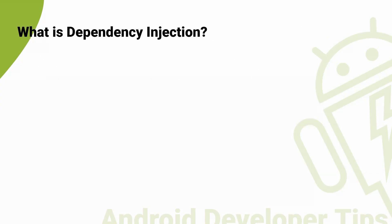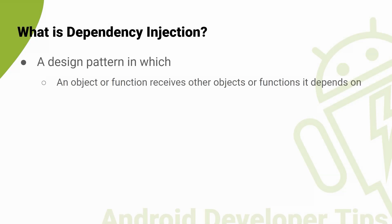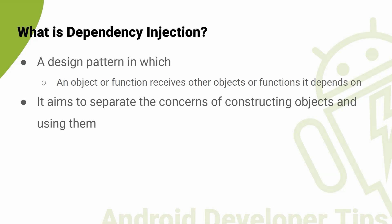What is dependency injection? Dependency injection is a design pattern in which an object or function receives other objects or functions that it depends on. It aims to separate the concern of constructing objects and using them, leading to loosely coupled programs. In simple terms, it allows the creation of dependent objects outside of a class and provides those objects to a class in different ways. Using DI, we move the creation and binding of the dependent objects outside of the class that depends on them.